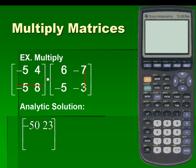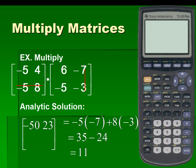Next, we will sum the product of elements of matrix 1, row 2, and matrix 2, column 2, for a result of 11. Our resulting matrix is negative 50, 23, negative 70, 11 — a resulting 2 by 2 matrix.